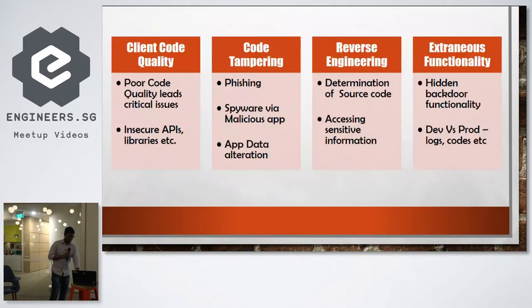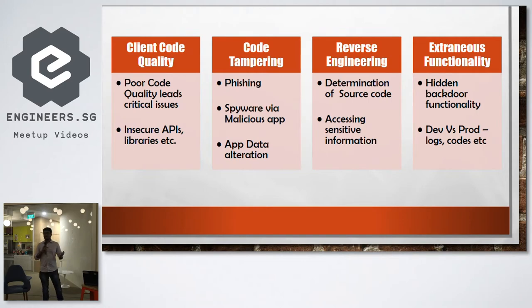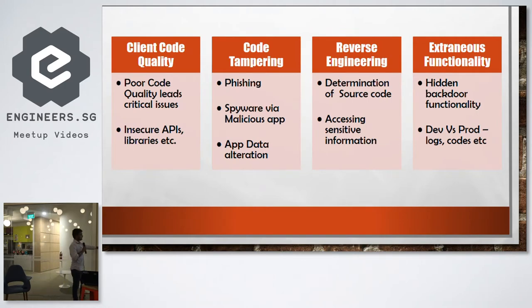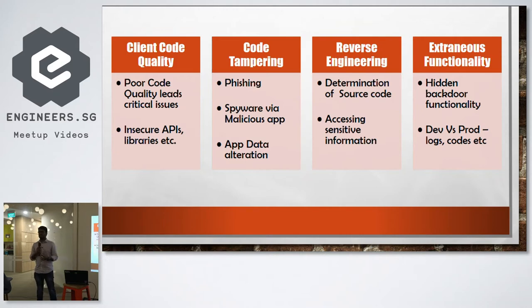Client code quality, as also covered in SAST, means not using insecure APIs that already have known vulnerabilities. If a library or API is already vulnerable, recommend to your product owner that it should not be used in the application.